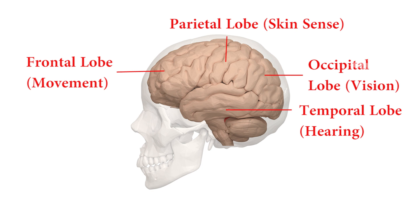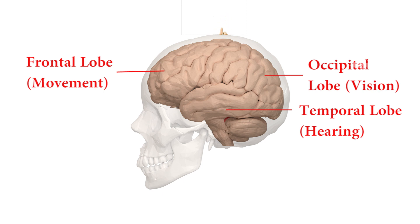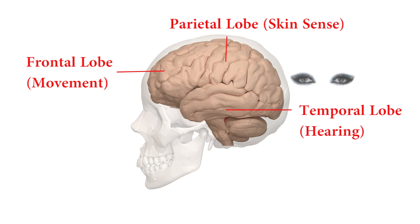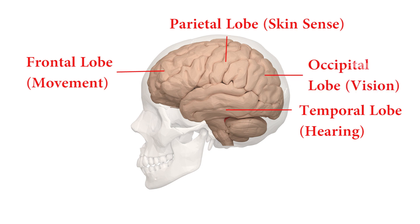The parietal lobe is a portion of the cerebral cortex behind the central fissure. It plays a major role in skin senses such as touch, temperature, and pressure. The occipital lobe is the portion of the cerebral cortex involved in vision. The temporal lobe of the cerebral cortex is involved in hearing.